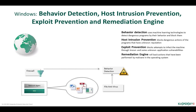The application activity log includes file access operations, established network connections, and system function calls. Host intrusion prevention categorizes applications into trust groups for which limitations are specified. Every program receives one of four trust levels: trusted, low restricted, high restricted, or untrusted. Kaspersky Endpoint Security assigns a trust group to a program when it starts for the first time, using Kaspersky Security Network as the main categorization tool. Host intrusion prevention limits interaction with other programs and operating system services depending on the trust group.